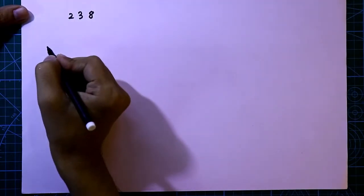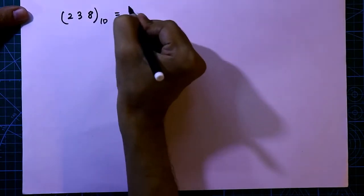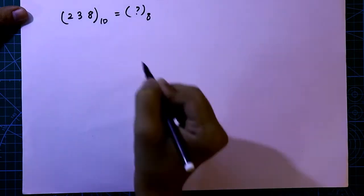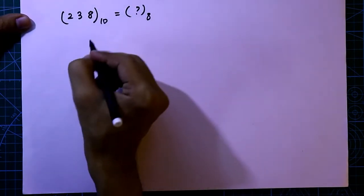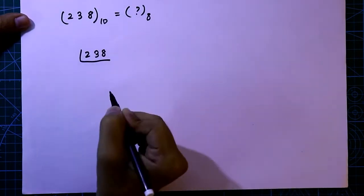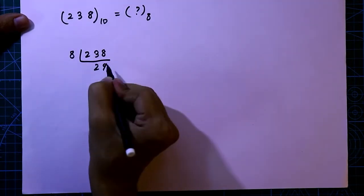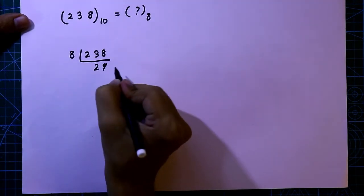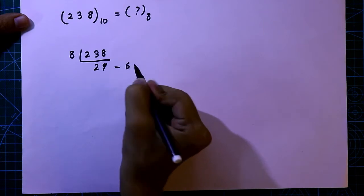Take a decimal number 238 and we have to find out the octal equivalent. To find out, we have to divide this number by 8. The quotient will be 29 and the remainder will be 6.